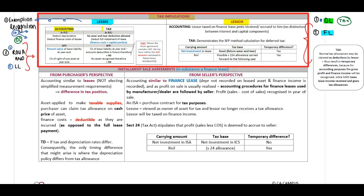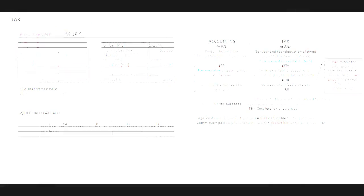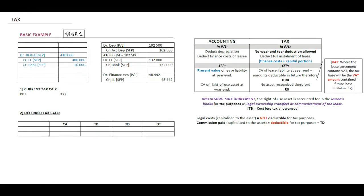We are still busy with our basic example in terms of our lessee, where we have recognized our right of use asset to the value of 410,000, a lease liability of 400,000, and credited bank with 10,000. We are still within year number one. On the right side of your screen you have all of this in front of you in your lecture notes. I want to work through this summarized table in terms of tax with you.